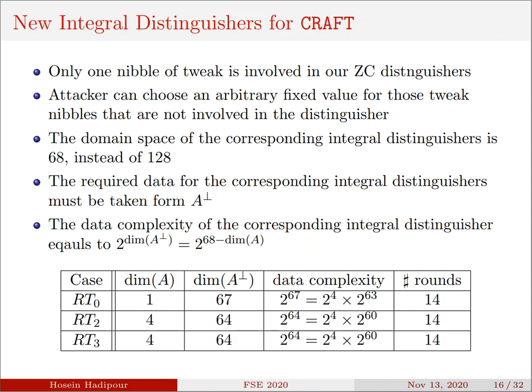Therefore, based on this relation, we can convert our zero-correlation distinguisher to integral distinguishers for the same number of rounds. This table summarizes the specification of our integral distinguisher. As you can see, they cover 14 rounds of CRAFT, where the best previous integral distinguisher covers up to 13 rounds of this cipher.